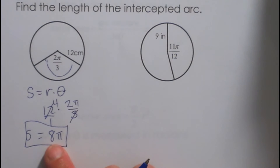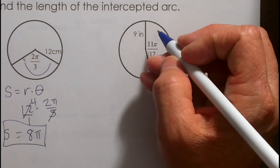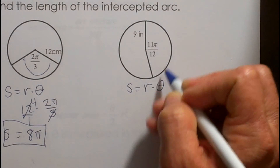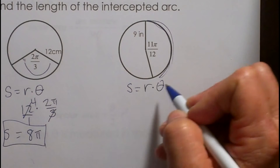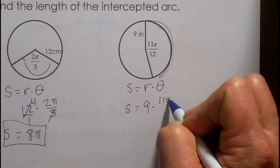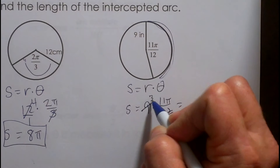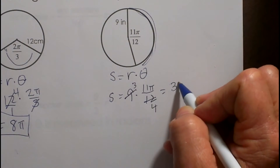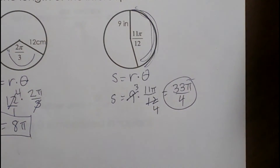Let's look at one more. Arc length equals radius times theta. We are finding this intercepted arc: radius is 9, and theta is 11 pi twelfths. So 9 times 11 pi twelfths — reduce by 3: 9 divided by 3 is 3, and the denominator 12 divided by 3 is 4. That gives us 33 pi fourths, which is the arc length of that intercepted arc.